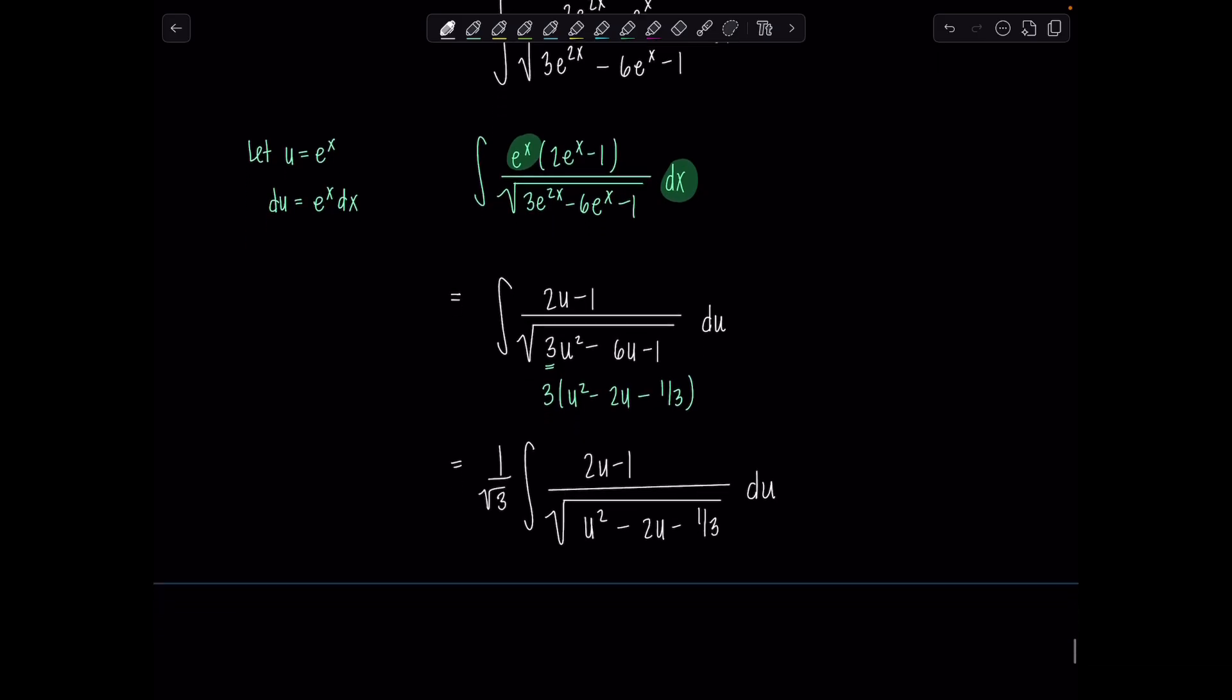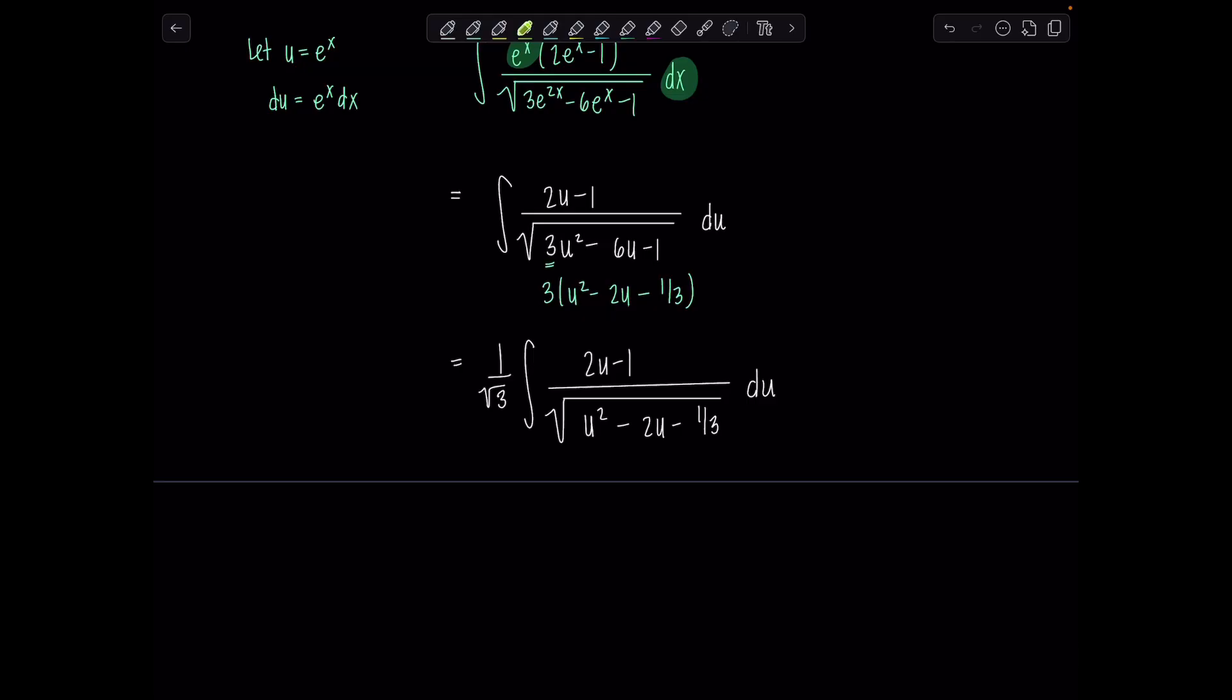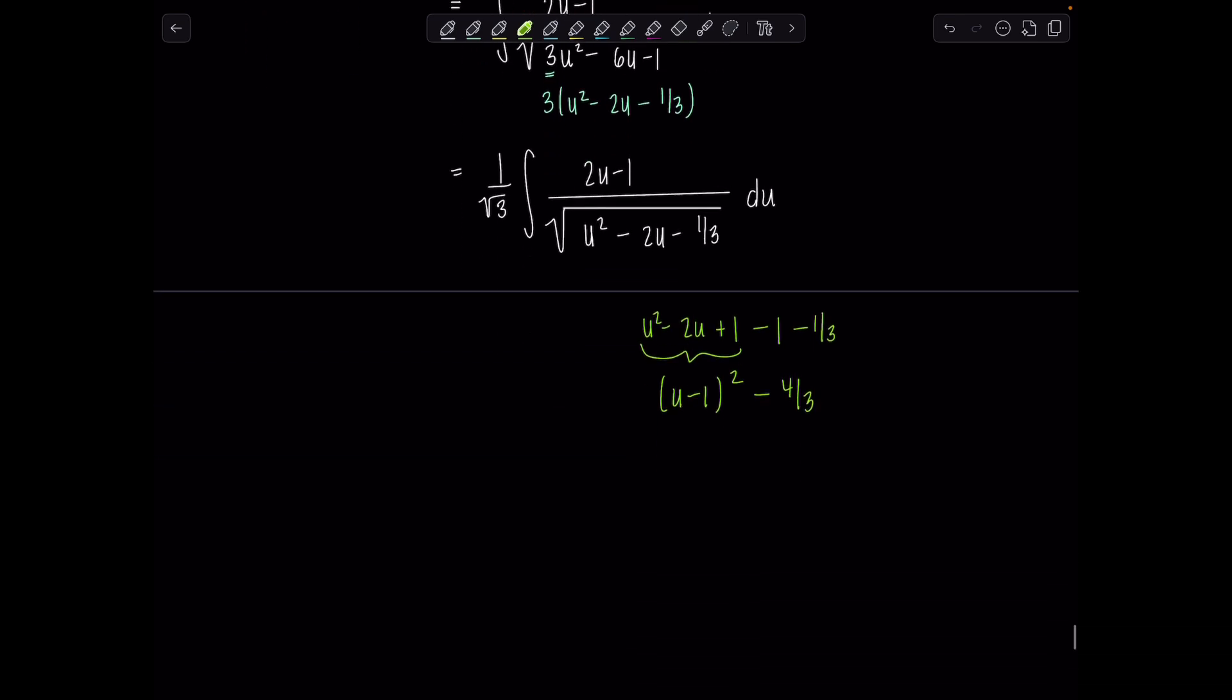Now let's work on completing the square underneath the radical. In order for u squared minus 2u to be a perfect square trinomial, I would need plus 1. So let me subtract 1, and don't forget there's a minus 1 third. So this becomes u minus 1 quantity squared, and then I have minus 4 thirds. So 1 over rad 3 integral 2u minus 1 over square root u minus 1 quantity squared minus 4 thirds du.